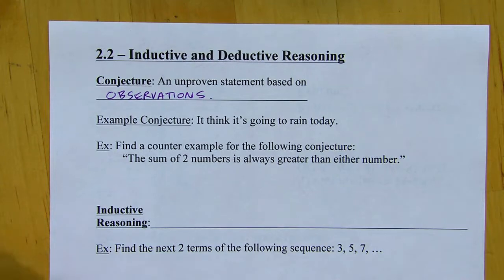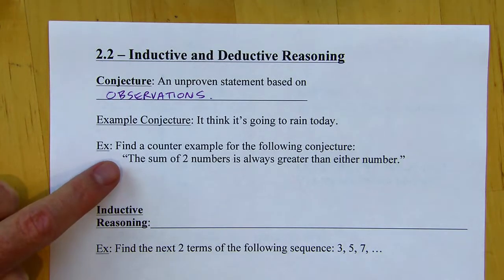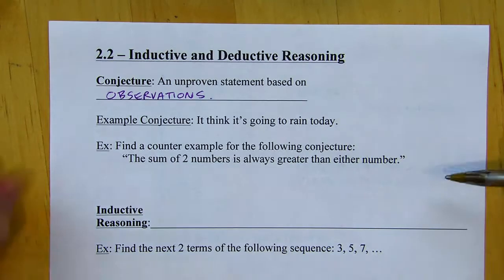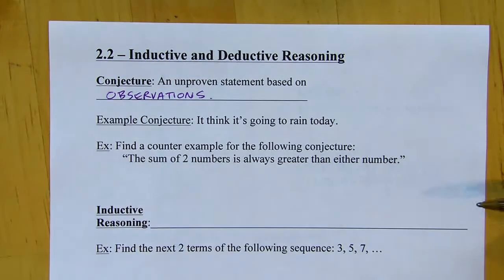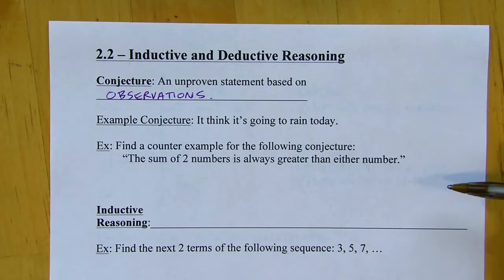For this next example, it says find a counterexample for the following conjecture: the sum of two numbers is always greater than either number. This conjecture sounds kind of good — like three plus four equals seven, and seven is greater than three and four.